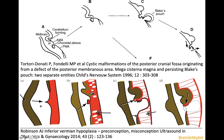The subarachnoid space develops from cavitation of the primitive meninges, and at a certain point in time the posterior membranous area starts to bulge or pouch — that is called Blake's pouch, after Joseph Blake. In the ninth or tenth gestational week there is perforation of the roof of Blake's pouch, establishing communication between the ventricular system and the subarachnoid space.